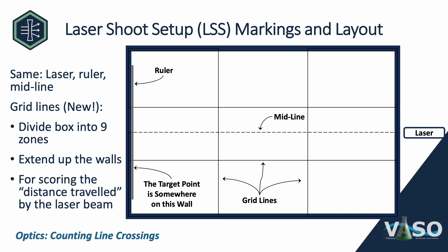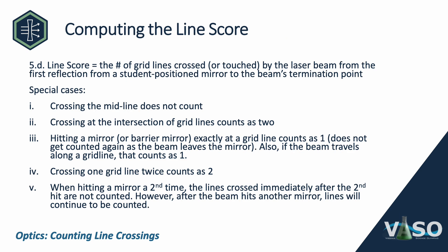The basic idea behind the line score is to score the total distance traveled by the laser beam, but it's not exactly the distance traveled — we don't try to measure that exactly because it would take a very long time. Instead, we use the number of crossings of these grid lines as a proxy for that. Rule 5D and its five special cases detail how to compute the line score, and I'm going to go through a bunch of examples that illustrate all of these pieces.